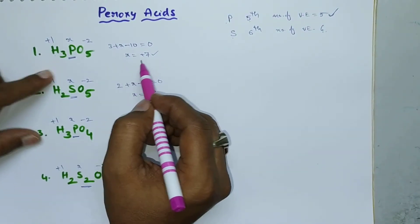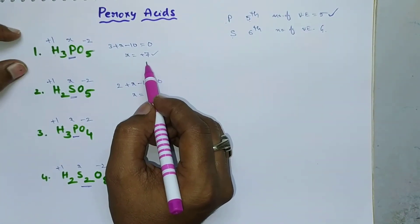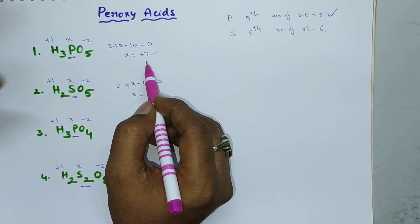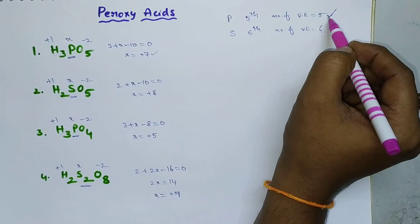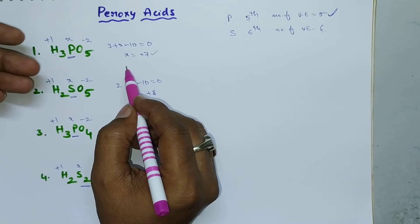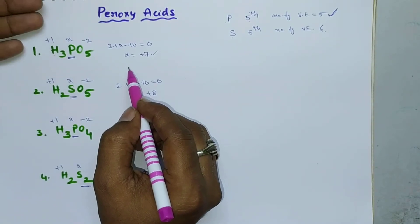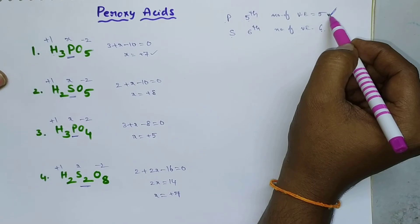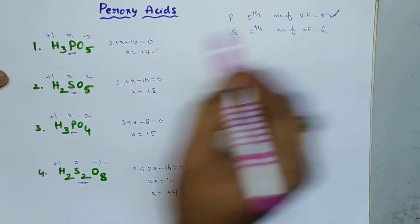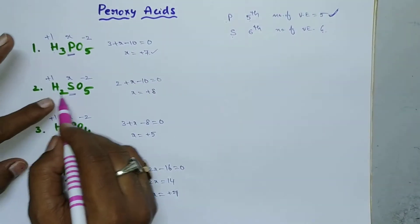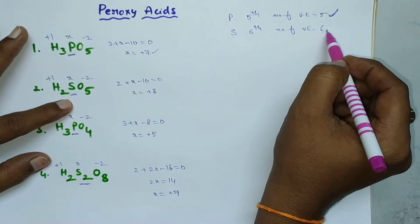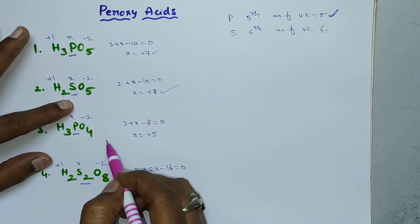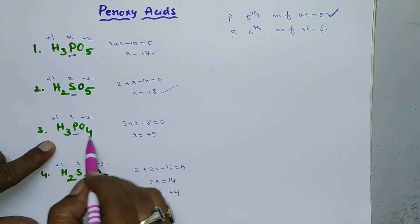That is why this is a peroxy acid. You can remember it like this: if an element exhibits an oxidation state greater than its number of valence electrons, then it is said to be a peroxy acid. Here also, sulfur's valence is 6, but it exhibits a +8 oxidation state, so that is also a peroxy acid.